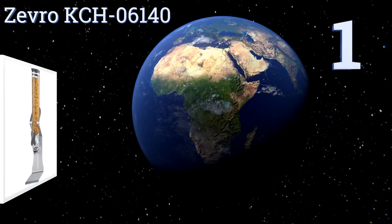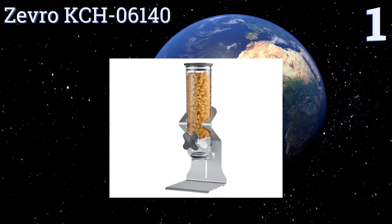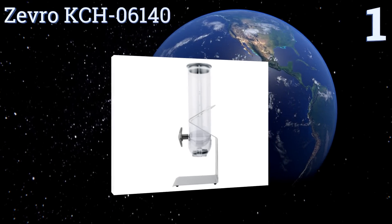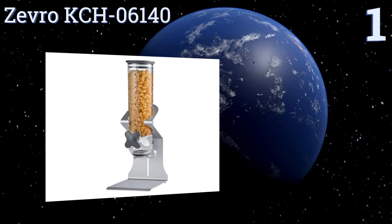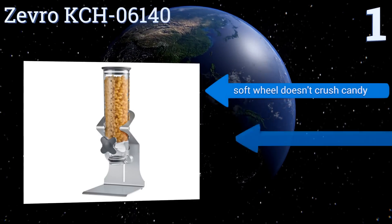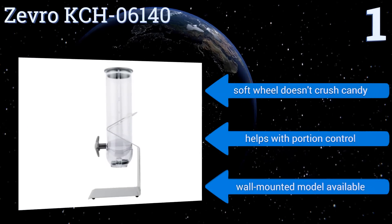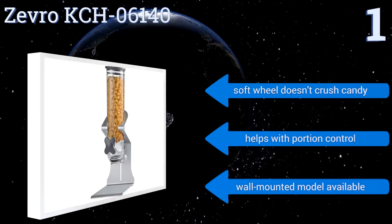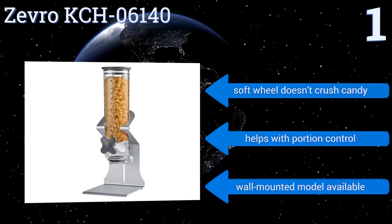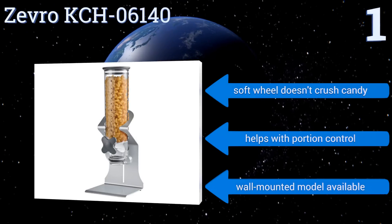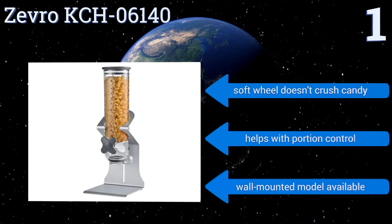And coming in at number 1 on our list. For on-demand snacking any time of day, check out the Zevro KCH06140. This sleek countertop display features a user-friendly design with an airtight seal that keeps candy fresh for up to 45 days. It dispenses one ounce at a time with just a simple twist of your wrist. Its soft wheel doesn't crush candy and it can help with portion control. A wall-mounted model is also available.